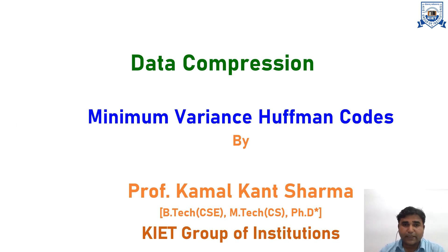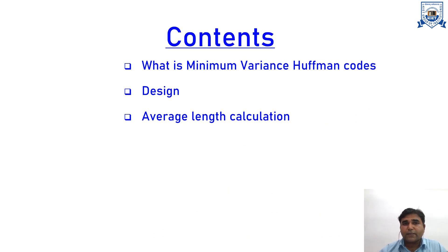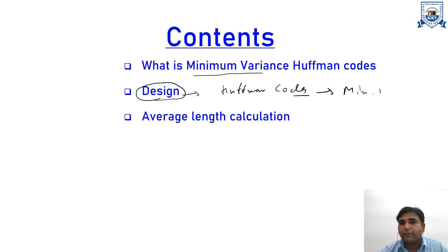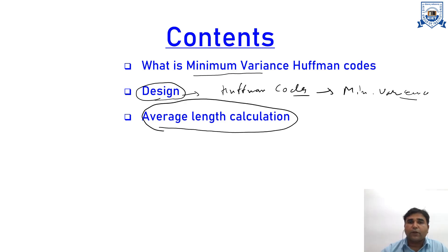Our next topic is Minimum Variance Huffman code. In this video we will discuss what is minimum variance Huffman code, then we will discuss the design part. We have a question and as per the given question we have to find out the Huffman codes, which are basically minimum variance Huffman codes. After that we will discuss how to calculate the average length for a particular question.